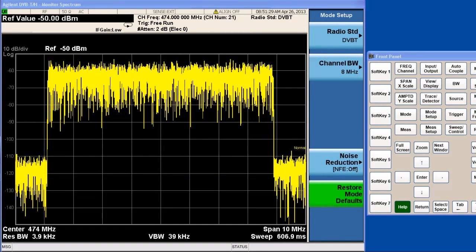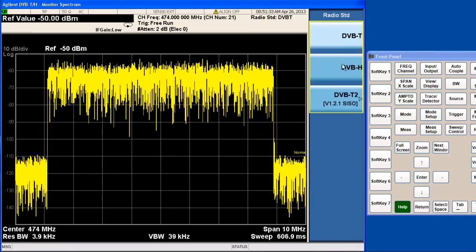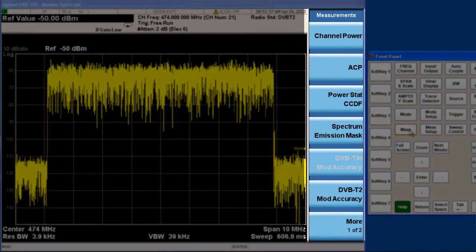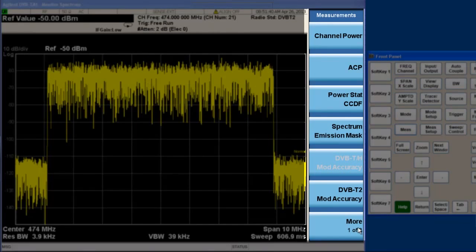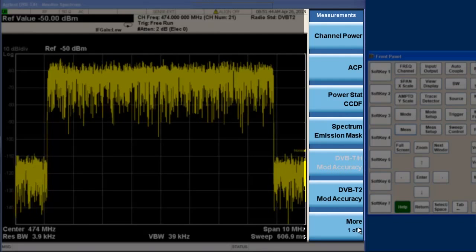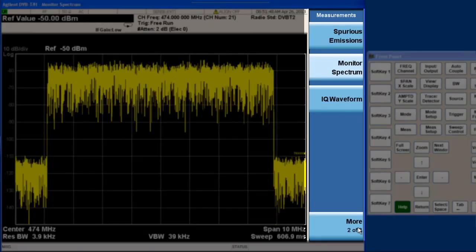After DVB-T2 is selected in mode and mode setup, we can see the measurement items by pressing measures. The measurements include channel power, SAP, CCDF, spectrum emission mask, modulation accuracy, spurious emission, and spectrum and IQ waveforms.